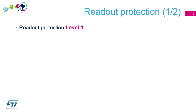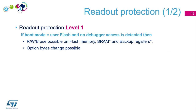At RDP level 1, there are two cases. First, if the boot mode is user flash — meaning the embedded bootloaders are not used — and if there is no debugging access, then the core can read and write the flash memory, SRAM, and backup registers. Option bytes can still be changed, but changing them is still possible via the embedded bootloaders, though you won't be able to access the flash through the bootloader.